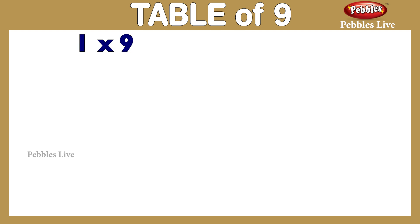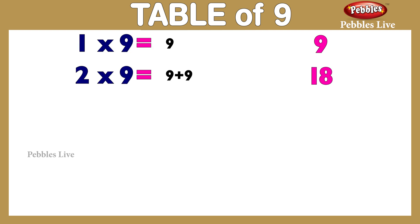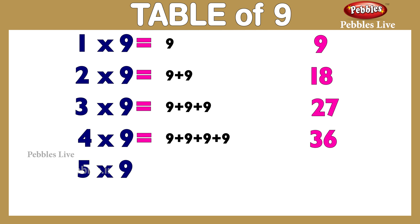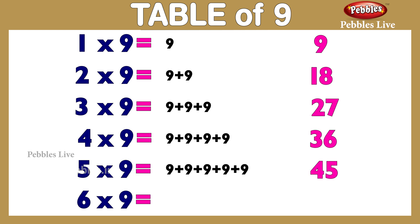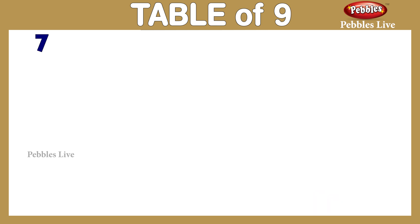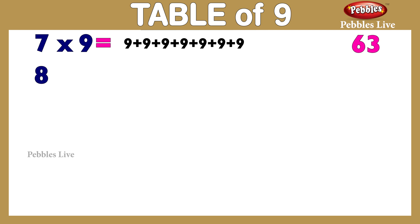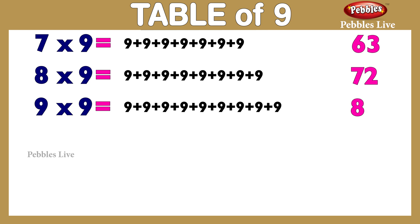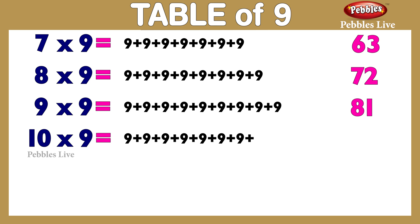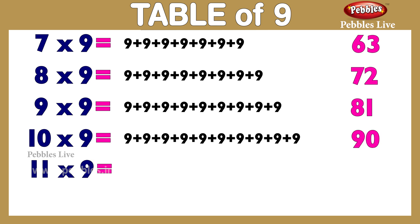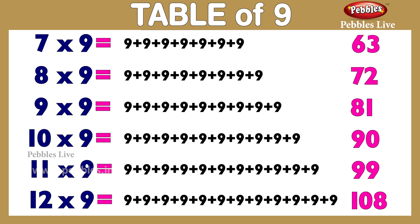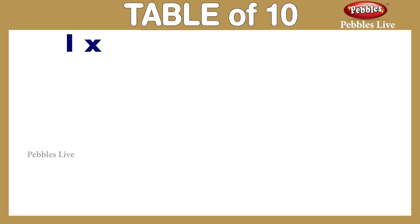Table of 9: 1 nine is 9, 2 nines are 18, 3 nines are 27, 4 nines are 36, 5 nines are 45, 6 nines are 54, 7 nines are 63, 8 nines are 72, 9 nines are 81, 10 nines are 90.